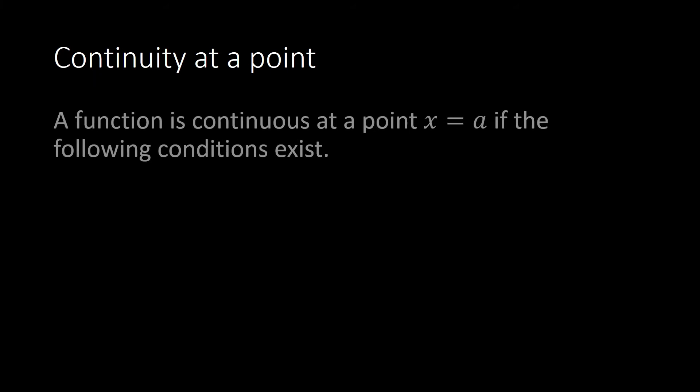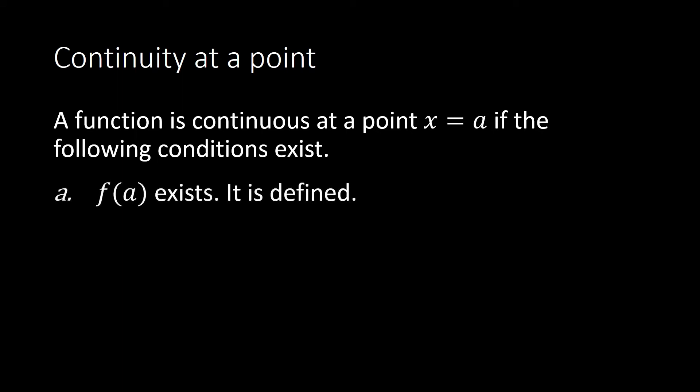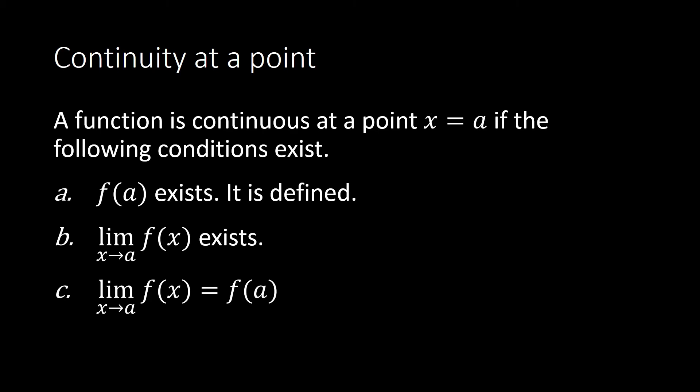Now we have a mathematical definition of when a function is continuous at a point. We cannot always rely on the graph because sometimes it's not easy to sketch, and sometimes the function is not given to you as a graph. So a function is continuous at a point x = a if the following conditions exist: f(a) exists and is defined when x = a; the limit of the function as x approaches a exists; and the limit of the function as x approaches a is equal to f(a).